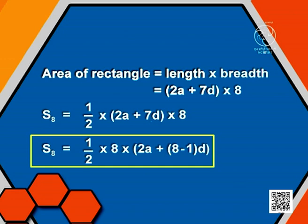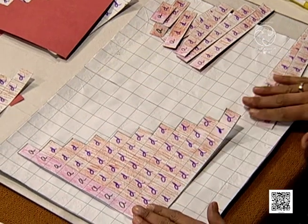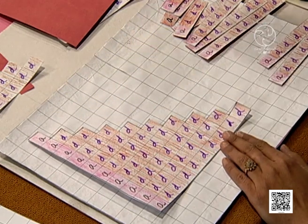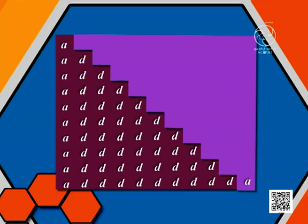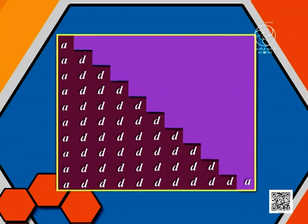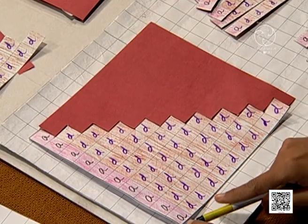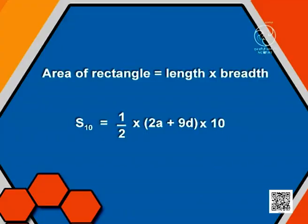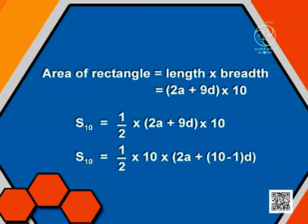Now we will be taking the sum of first 10 terms. This piece is representing the sum of first 10 terms, with A, A plus D up to A plus 9D arranged, and the replica placed alongside to form a rectangle. In this rectangle, the length is 2A plus 9D and the breadth is 10 units. So S10 will be half of the area of this rectangle, that is half of 2A plus 9D into 10, equal to half of 10 into 2A plus 10 minus 1 into D.